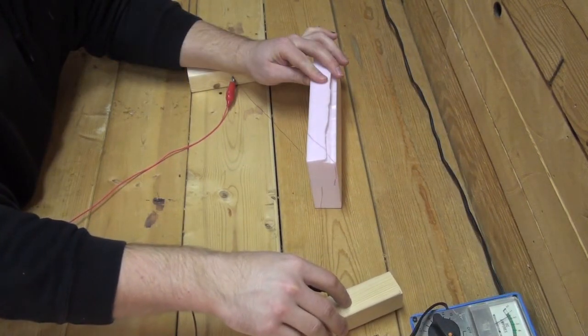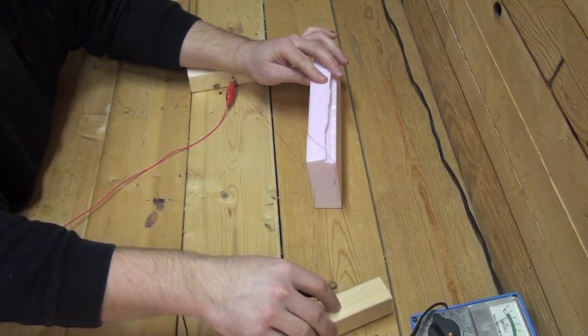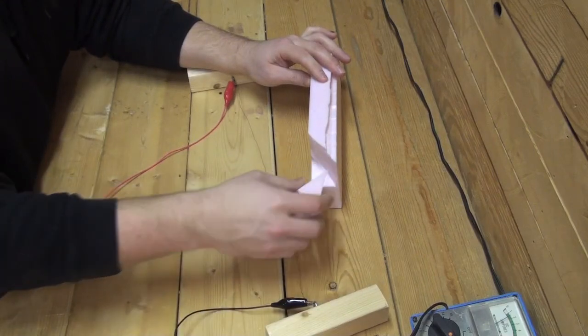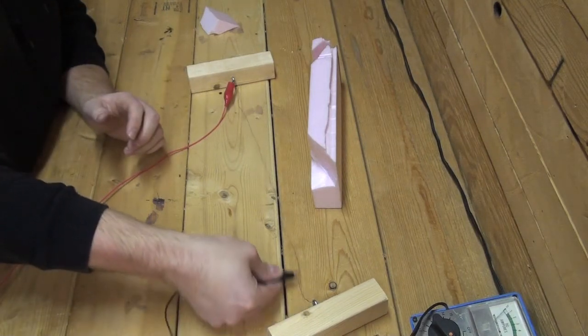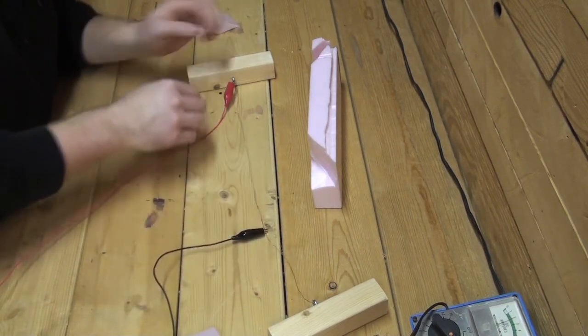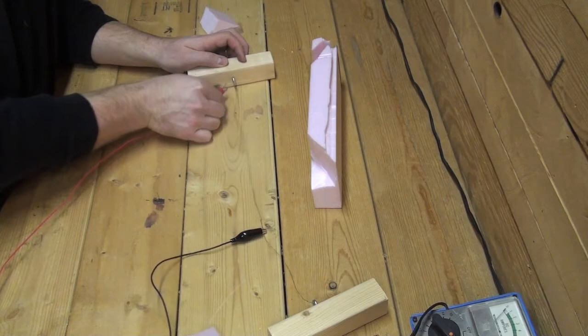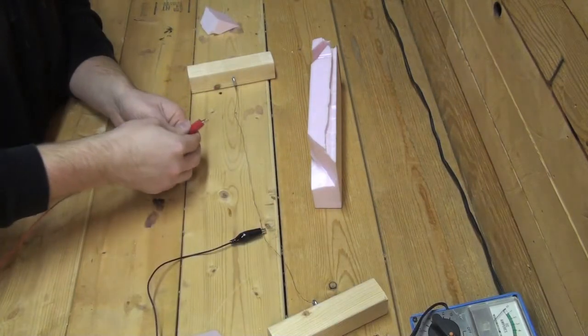You may notice that the nichrome is cutting relatively slowly with this length. As I shorten the length between the alligator clips, I am forcing a higher amperage to be drawn from the power supply, and thus achieving a higher temperature.